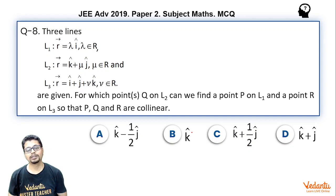Now it has been asked for which points Q on L2 can we find a point P on L1 and a point R on L3 so that P, Q, R are collinear. Four options are given, it is a multiple correct type question. Let's solve it.